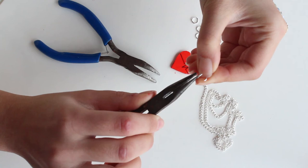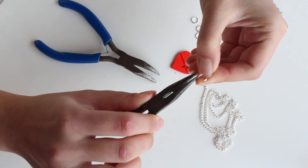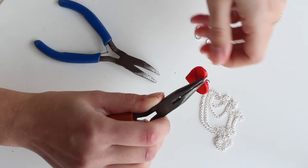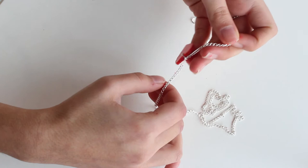Get your pliers and attach the jump ring to the pendant. Put the chain through it and finish off by adding a clasp.